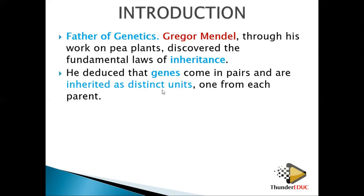Genes are inherited as distinct units, meaning one character does not interfere with another character during inheritance. Each character is inherited separately — one part comes from the father and one from the mother. Each parent is supposed to give one part of the character, since there are supposed to be two.